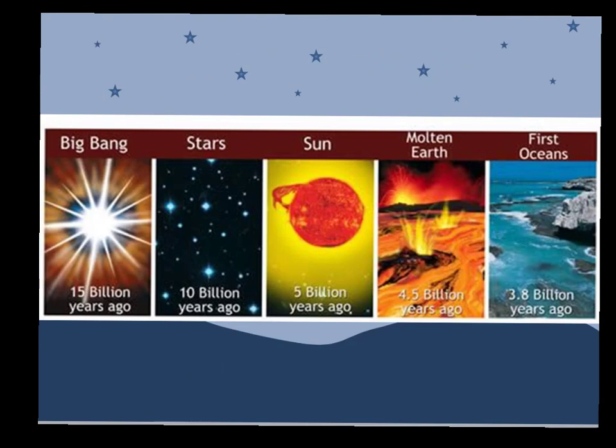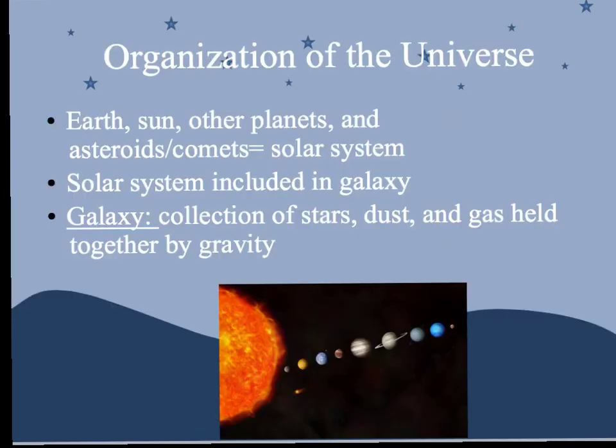Here's a little timeline. The Big Bang Theory occurred 14 to 15 billion years ago. 10 billion years ago we have our oldest stars. Our sun is about 5 billion years old. 4.6 billion years ago is when we had our Earth. And 3.8 billion years ago is when we first got our oceans. The universe works out nicely — neat and organized for the most part.